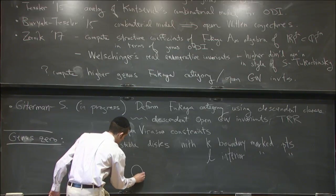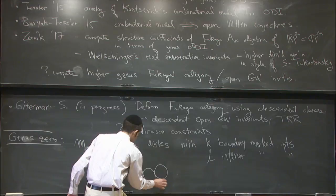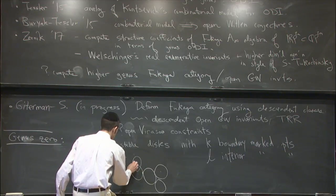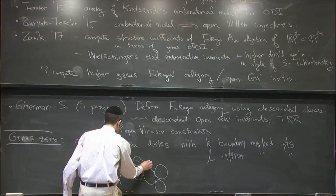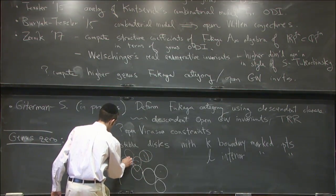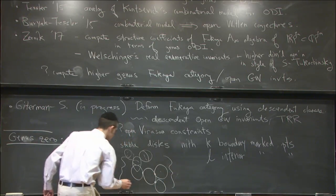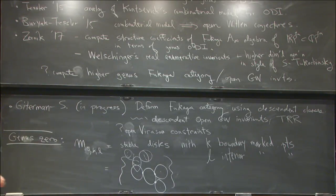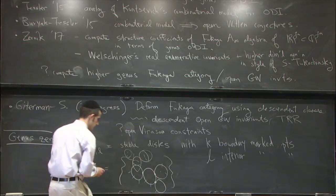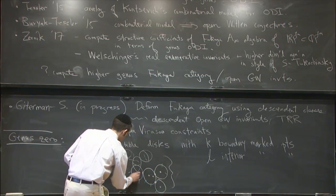In general, you might think of something like this: you have a disk joined to another disk by some node, and then you could have a whole tree of such disks. You might also have some spheres bubbling off from the interior, and various trees of such spheres. This is a stable disk, with boundary marked points and interior marked points.